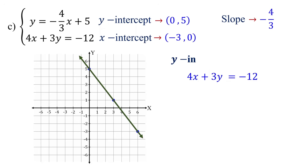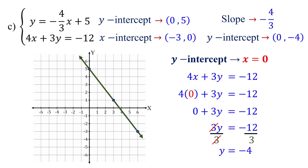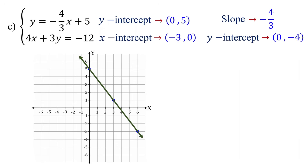Next, let's find the y-intercept by setting x to 0 and solving for y. 4 times 0 equals 0, and we get 3y equals negative 12. To isolate y, divide both sides by 3, giving us y equals negative 4. Therefore, the y-intercept is (0, -4). Now, plot the x-intercept at (-3, 0) and the y-intercept at (0, -4).